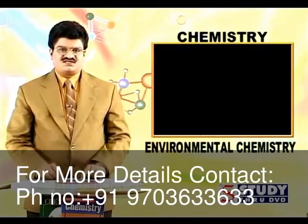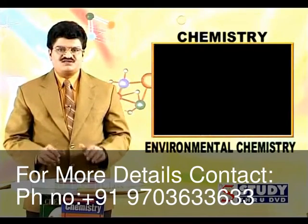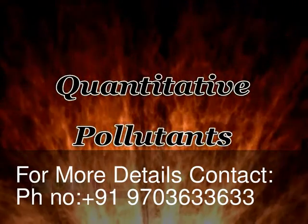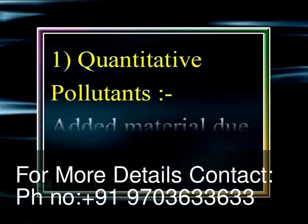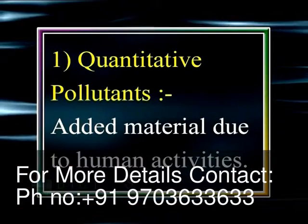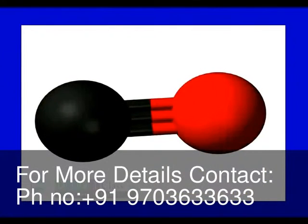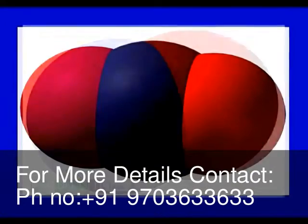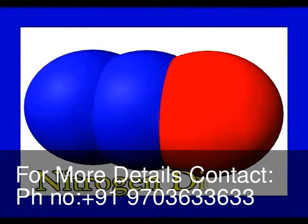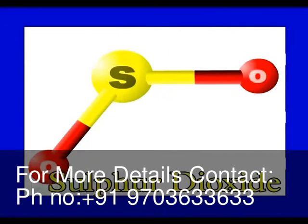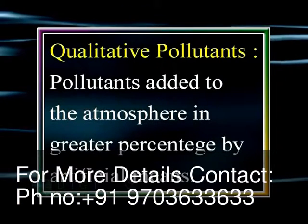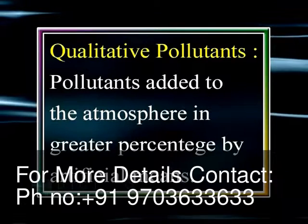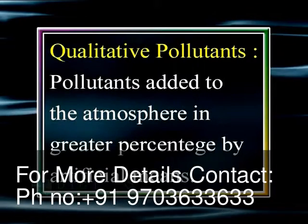Based on existence, pollutants are classified into two types. The first type includes pollutants added as material due to human activities — examples are carbon monoxide, carbon dioxide, nitric oxide, nitrogen dioxide, and sulfur dioxide.